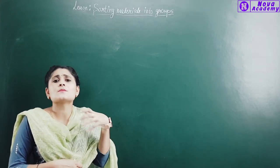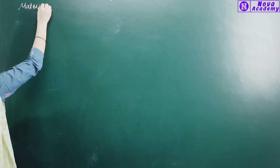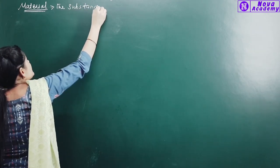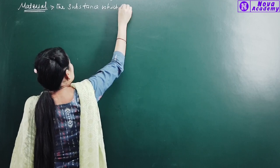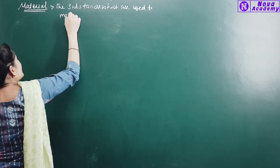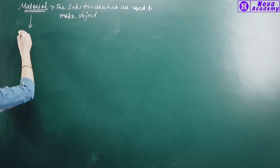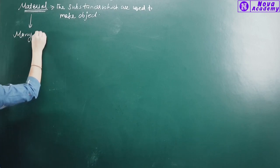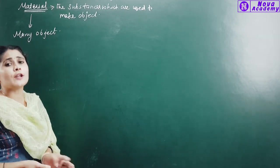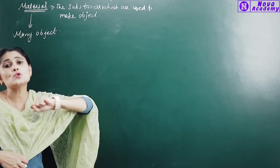So what is the material? Substances which are used to make any object — that is the material. One material can be used to make many objects. Like plastic: tiffins, chairs, buckets. Or wood: furniture, pencil. A lot of materials can be used to create a lot of objects.